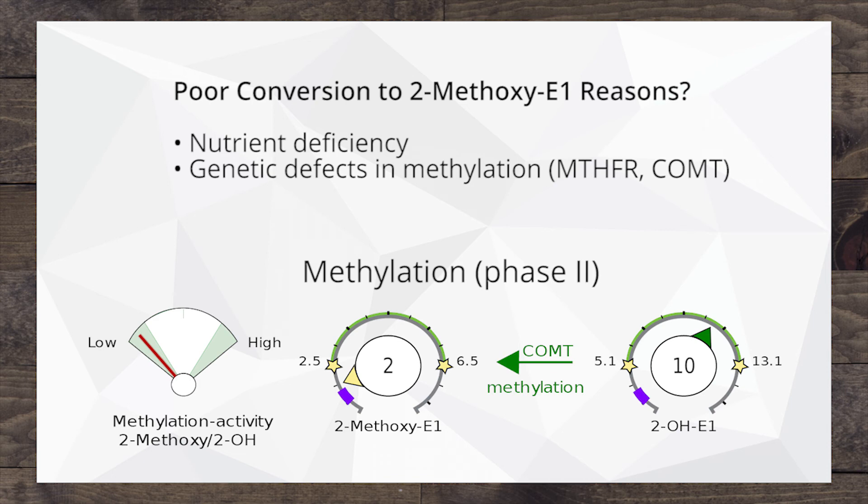Then you can start investigating whether that's nutrient deficiency or maybe a genetic defect. People have been testing a lot recently with MTHFR, COMT. These are some of the genes that are actually involved in methylation, and you can actually test those for genetic defects. And when we see people with those genetic defects, you can definitely see an impact on the methylation. We're looking at the overall levels of the estrogens, phase 1 metabolism, and phase 2 metabolism or the methylation step.